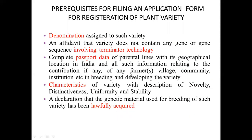When making an application, the prerequisites are: first, assign a denomination — a name — to the variety; second, provide an affidavit that no terminator technology has been used. Terminator technology produces seeds that are not fertile, meaning the farmer cannot save seed for the next season — this technology is not accepted for registration in India or Pakistan. Third, provide complete passport data including parental lines, geographical location, and the complete pedigree of where the variety was developed.